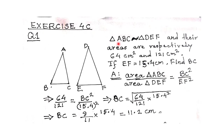Triangle ABC is similar to triangle DEF. The areas of the two triangles are respectively 64 cm² and 121 cm². If EF is equal to 15.4 cm, find BC. This is a very simple question — you only need to apply the formula.